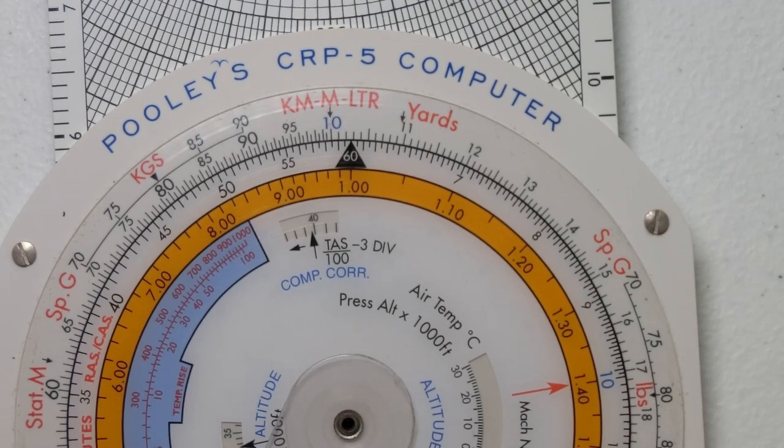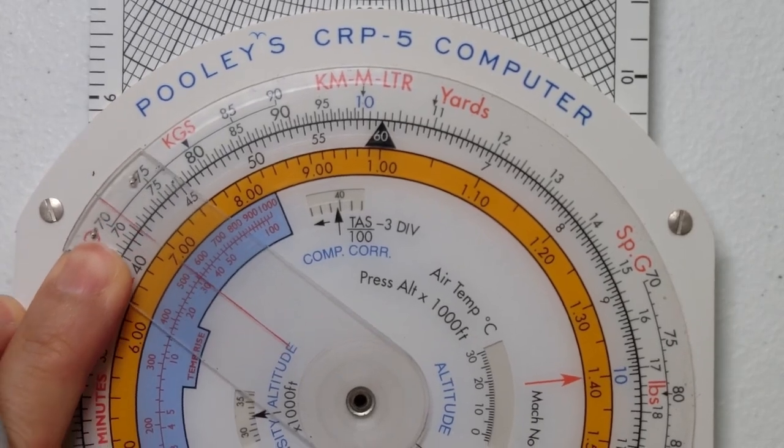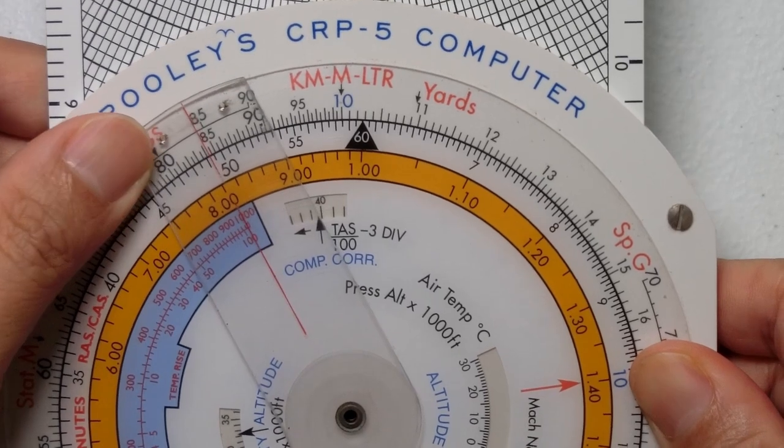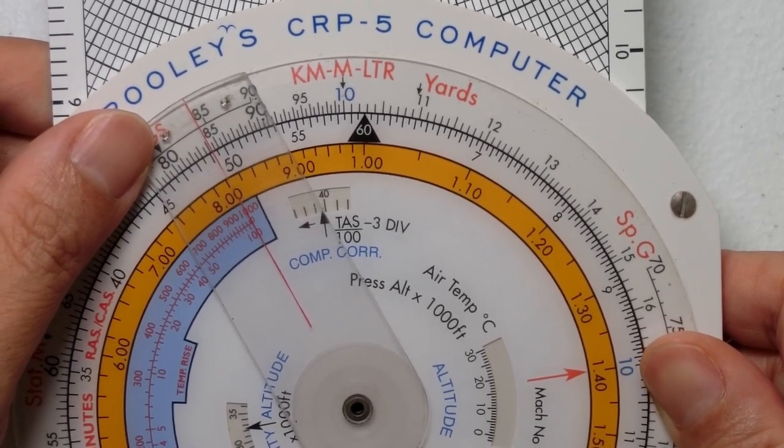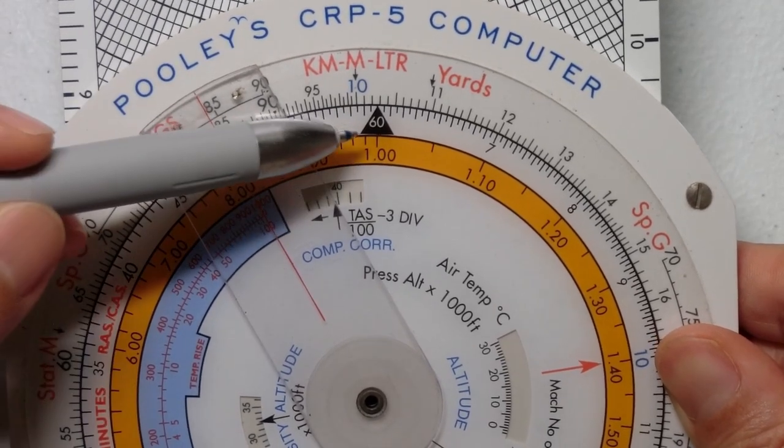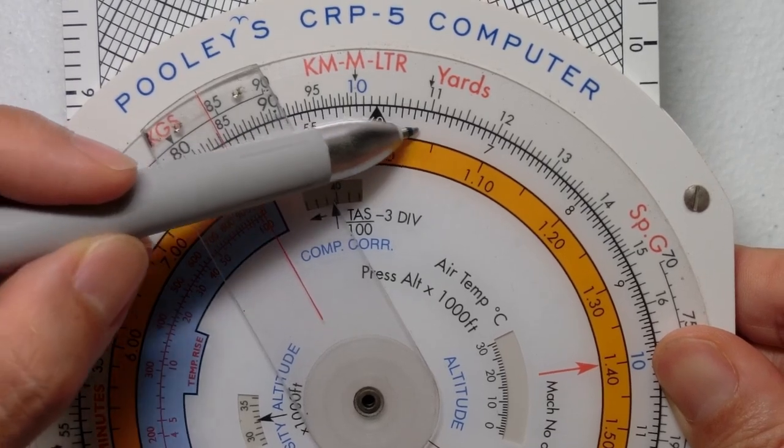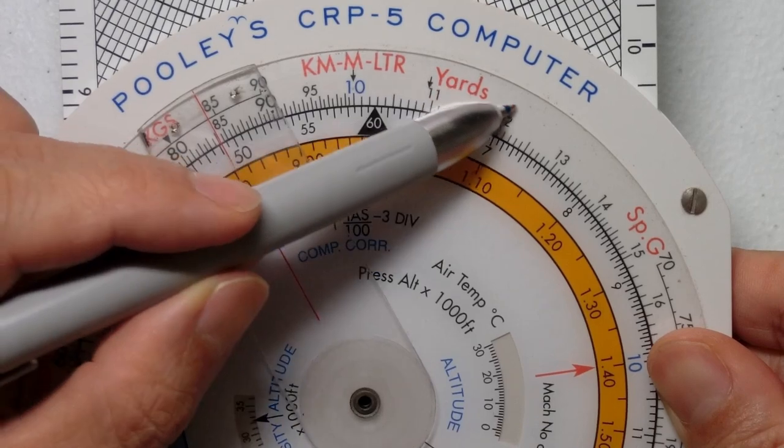The second step is we will move the cursor to whatever distance it is that we want to measure on the outer scale. And the third step would be to read off the time on the inner scale. That's the scale where we have the black triangle, so this scale would be the scale for time and the outer scale would be the scale for distance.